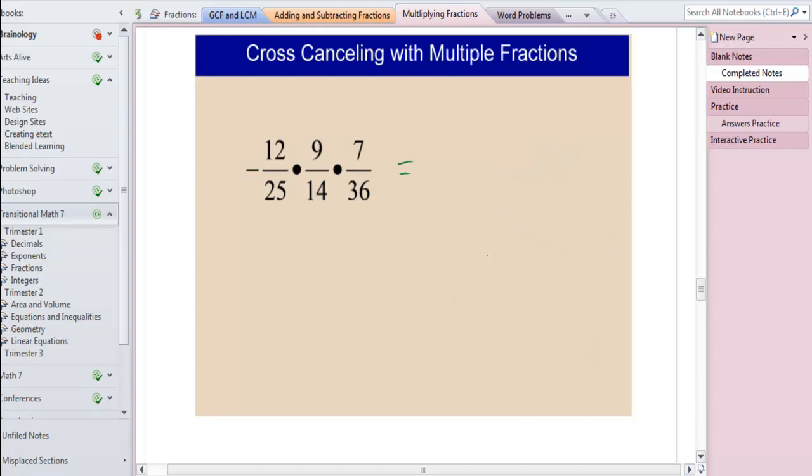So because of that, we can cross-cancel anywhere we'd like. So you see anywhere that you can cross-cancel? How about 7 and 14? How about 12 and 36? Now you can cross-cancel again if you find a place where you can cross-cancel again. So these 3 and 9 will cross-cancel. And now I've cross-cancelled as much as we can. So we're going to multiply straight across. 1 times 3 times 1 is 3. 25 times 2 times 1 is 50. And we have one negative. We have an odd number of negatives, so our answer is negative.